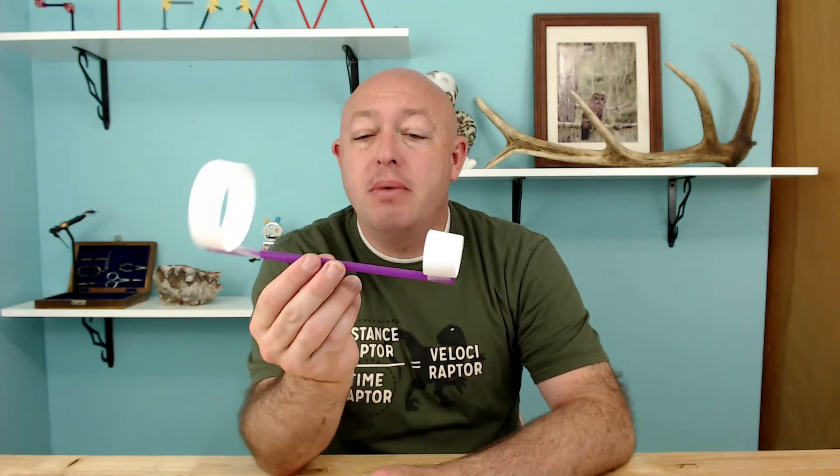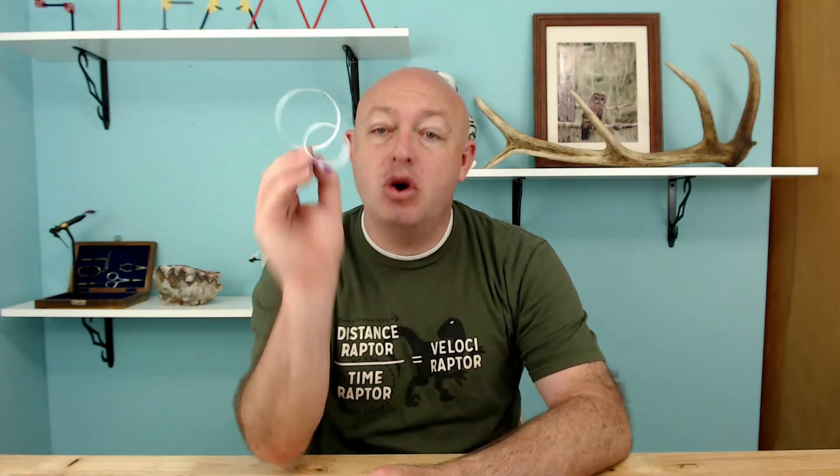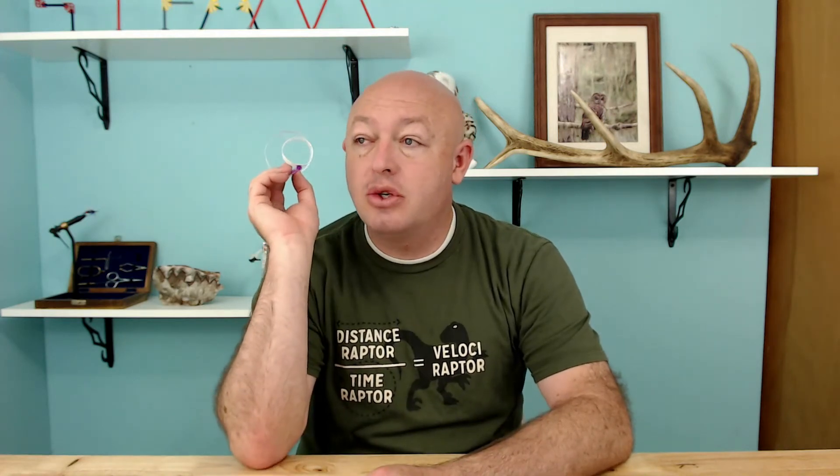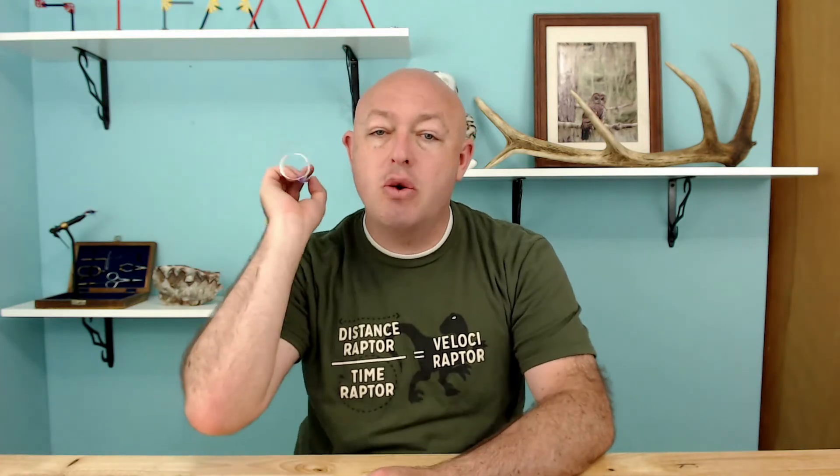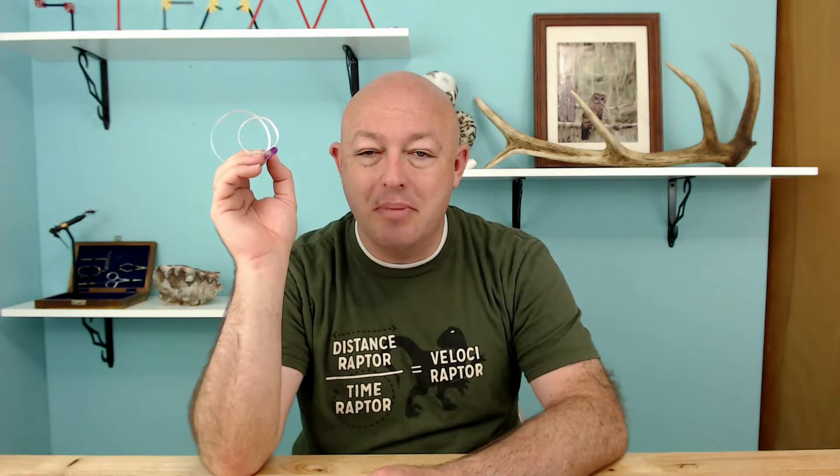All right, now that you have made an official hoop glider and are ready to fly them, why don't you go outside and give it a toss. To fly them, hold them right in the middle with the hoops up, pull your arm back, and throw them forward. Try to make sure that the hoop glider is going straight.